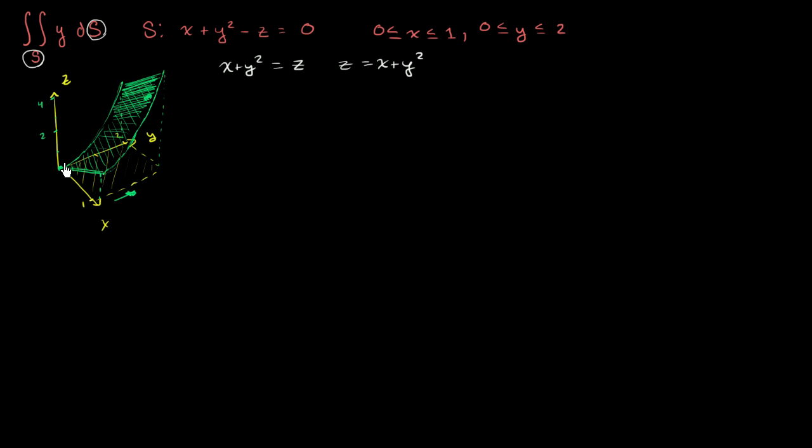As you know, the first step is to figure out a parameterization. It should be pretty straightforward, because we can write z explicitly in terms of x and y. So we can actually use x and y as the actual parameters, or substitute with different parameters if we want. But let me just write this out.